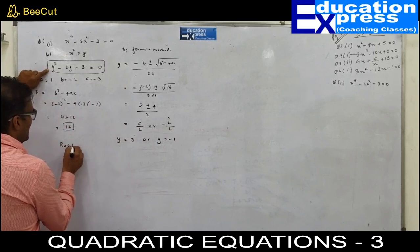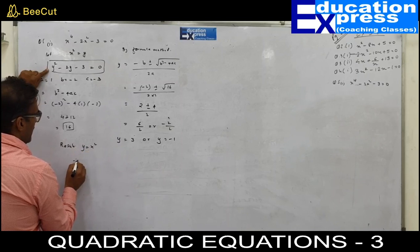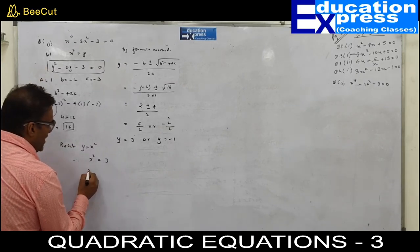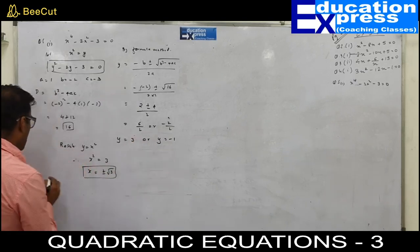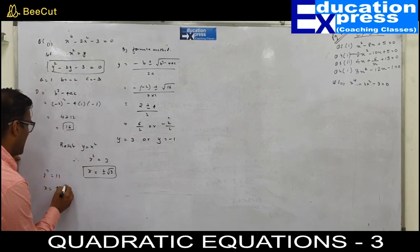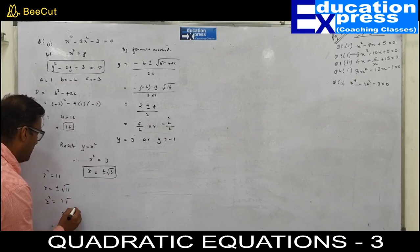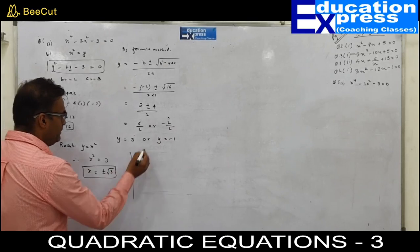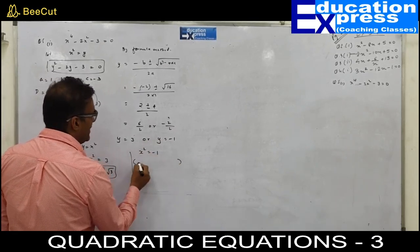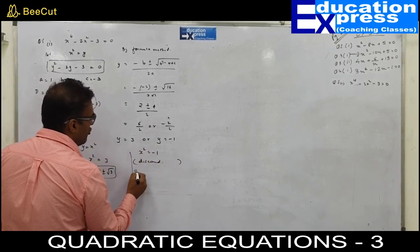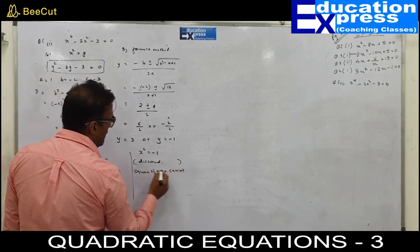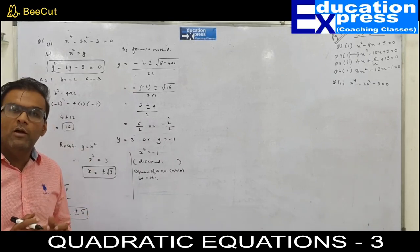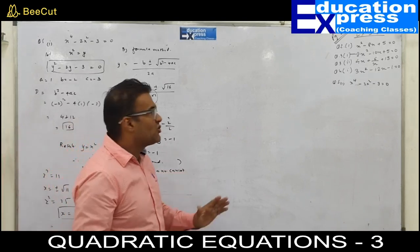Since y equals x squared, we re-substitute. If y equals 3, then x squared equals 3, so x equals plus or minus root 3. If y equals minus 1, then x squared equals minus 1, which we discard because the square of a number cannot be negative — meaning x is not a real number. Therefore my answer is restricted to x equals plus or minus root 3. With this, question number 5 comes to an end.